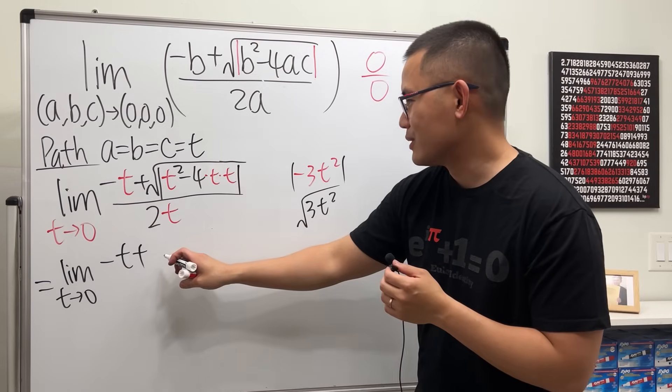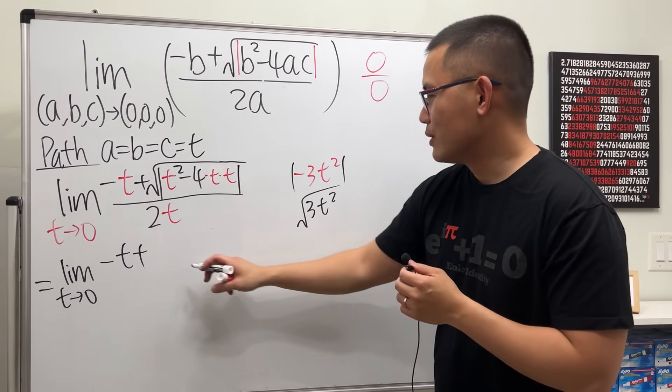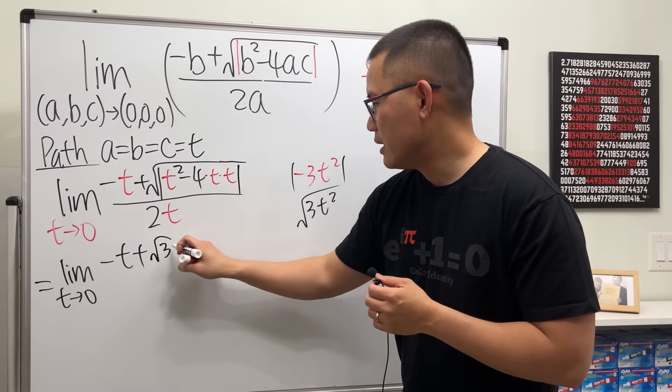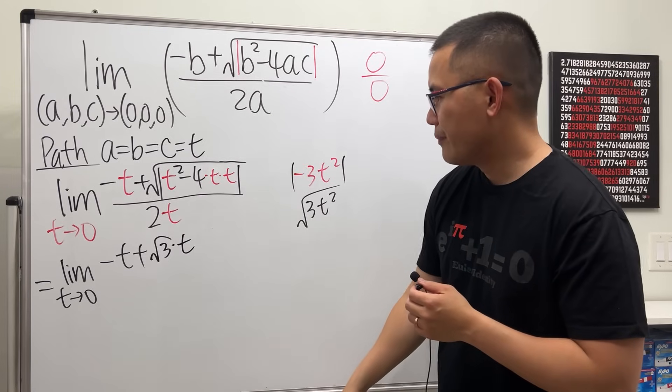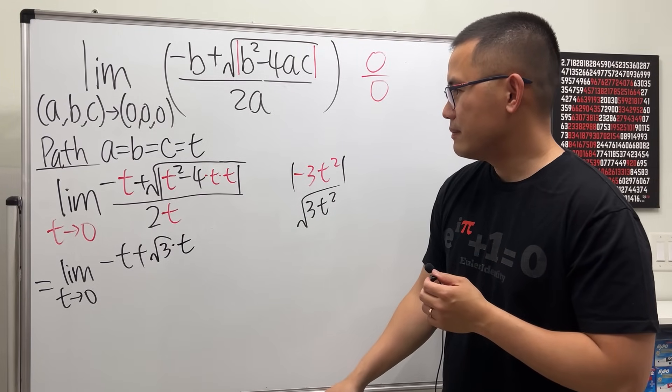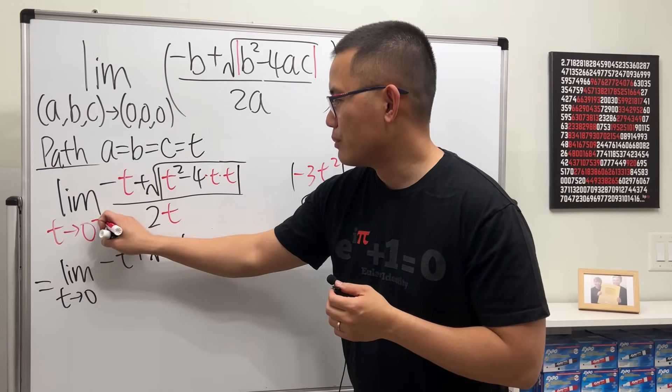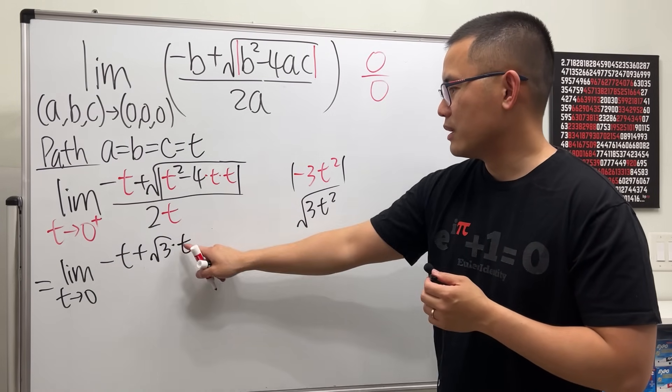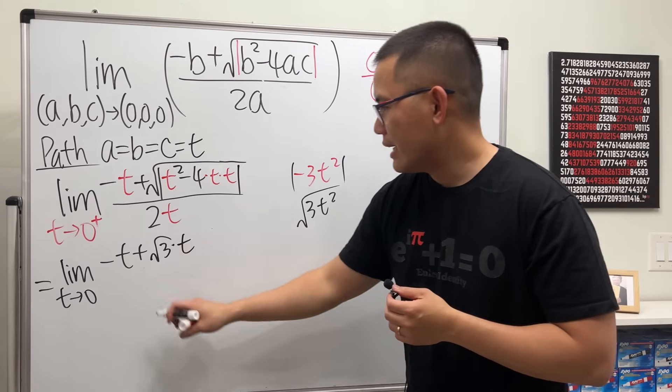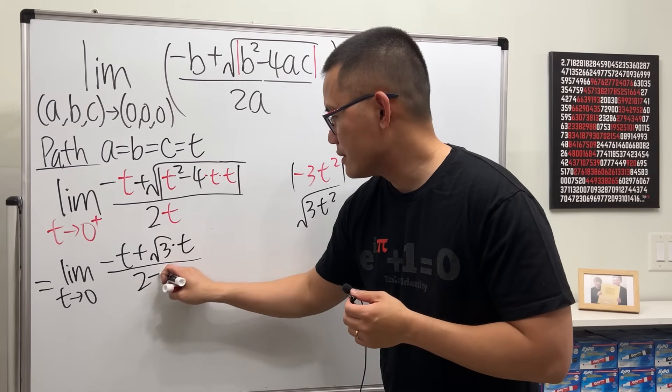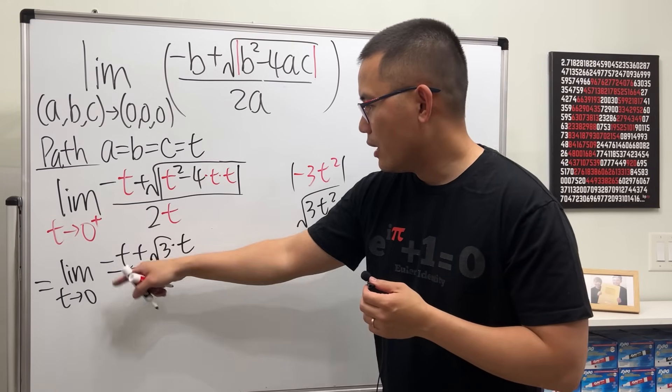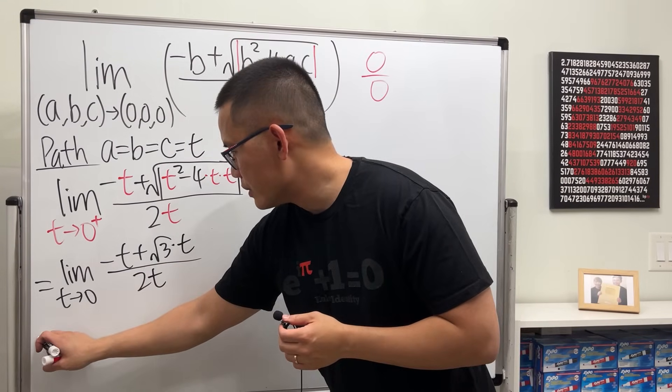So this right here will give us the limit as t goes to zero. We have negative t plus square root of three. Okay, fine, I'll just deal with that. So I would just say we have square root of three times t. Maybe we need absolute value, but let's just say t goes to zero plus, so don't need absolute value for that, and then over two t.